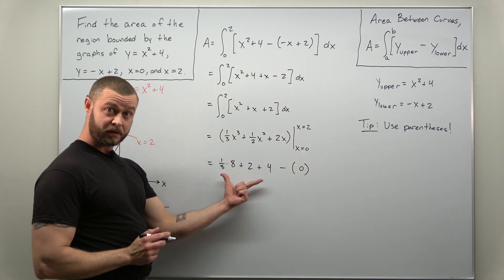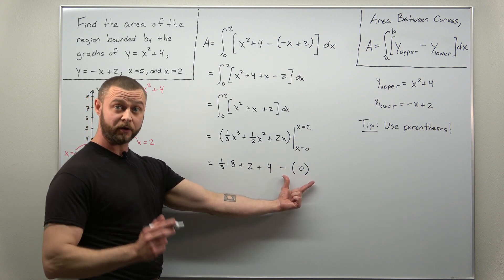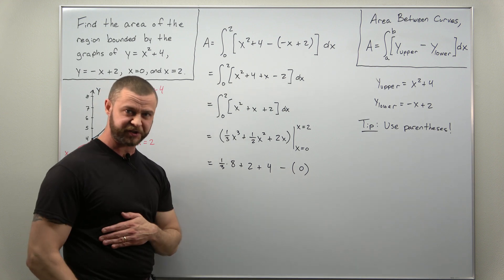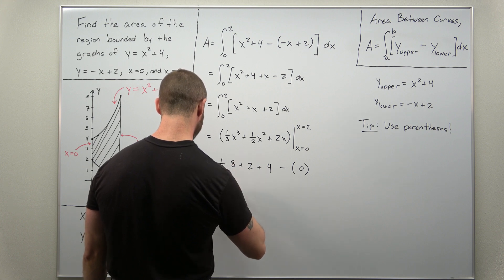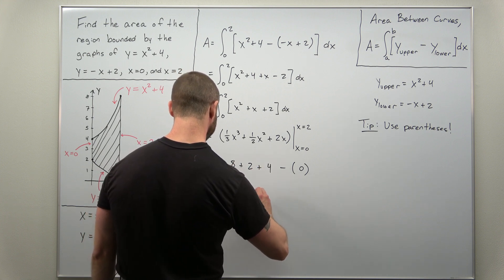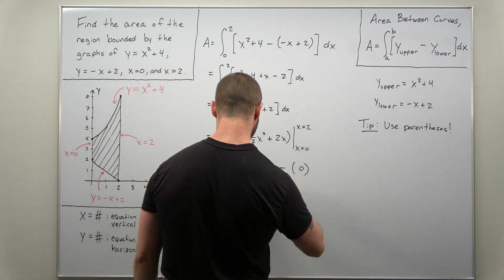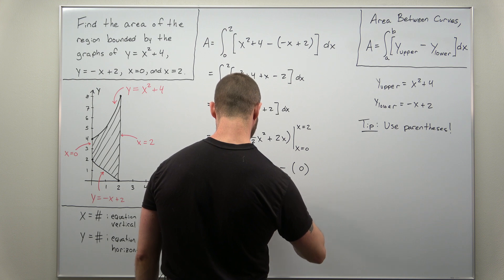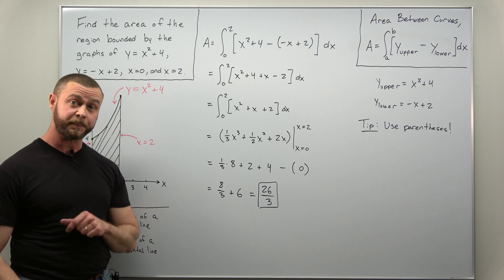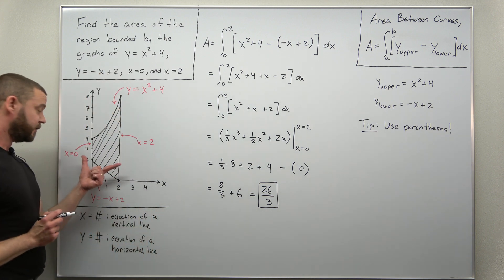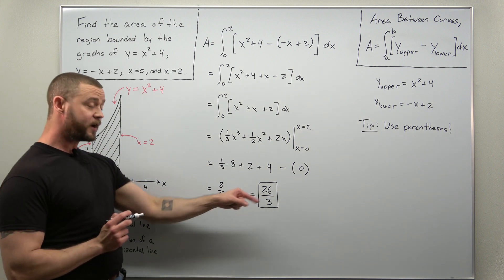We have minus, this was our upper limit we're plugging in 2, and then we have now minus when we plugged in the lower limit 0, but that's just 0. All right and from here you can just simplify with a common denominator, we have 8 thirds plus 6, and if you go through that, combine that over a common denominator of 3, you should get this comes out to 26 thirds. So the area of this region, the area bounded between those four curves comes out to 26 over 3.